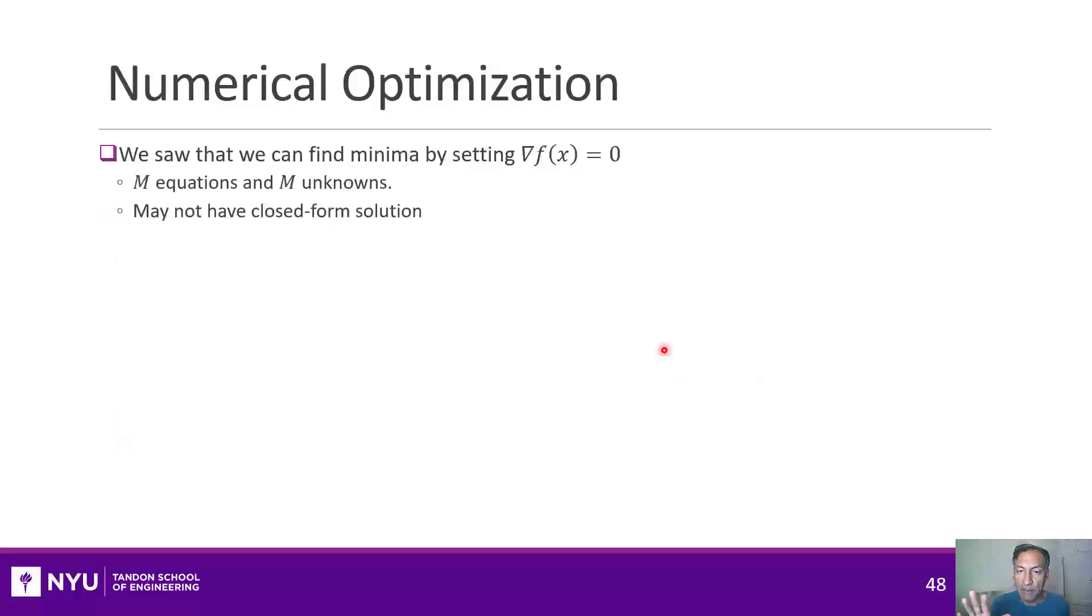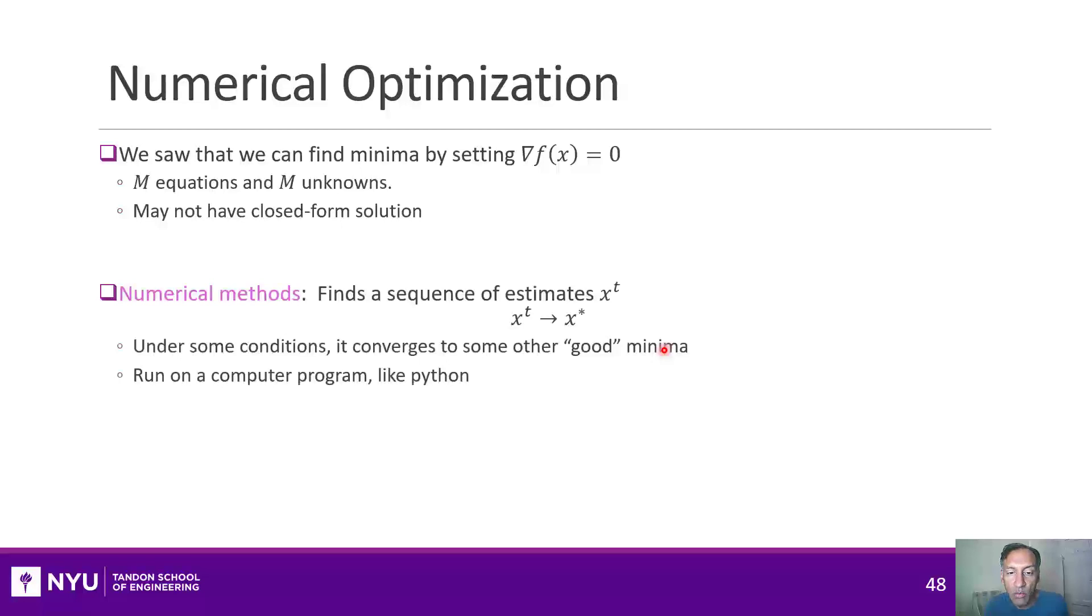We have to step back and think in general about how we try to minimize functions. So if I have any function of some variables, like x, and if x is a vector with m coefficients, I would take its derivative, or its gradient, and set it equal to 0. And I get m equations and m unknowns. But sometimes you can't solve that, like we've seen. Instead, what you have to do in these cases, is do what's called a numerical method. A numerical method is a computer algorithm that starts at some guess for x, and tries to get a sequence of points x, that eventually converge to a good minimum. And then you run this program on your computer.